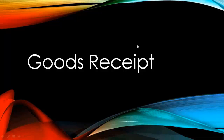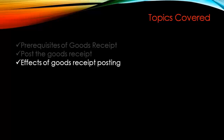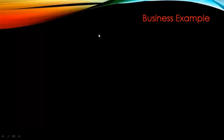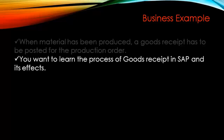Next we're going to learn about the Goods Receipt Process in SAP Production Planning. The topics we'll be covering today are the pre-requisites of Goods Receipt, posting the Goods Receipt, and the effects of Goods Receipt posting. When material has been produced, a Goods Receipt has to be posted for the production order — it is the final step after all operations are confirmed.